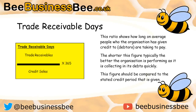Trade receivable days is calculated using the formula: trade receivables divided by credit sales, times 365 — because there are 365 days in a year. This ratio shows how long on average the people in the organization who owe money and have been given credit will take to pay.